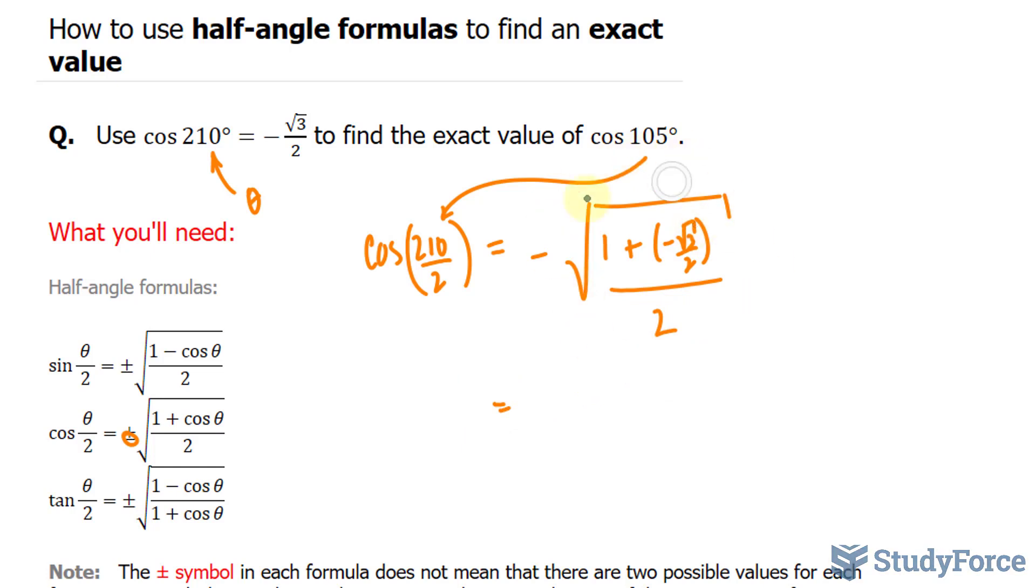Now your teacher might want you to reduce this and simplify this expression as much as possible. So let's go ahead and do that. We have negative square root of 1 over 2. We have plus minus side by side. We'll choose minus. Minus square root of 3 over 2 over 2.